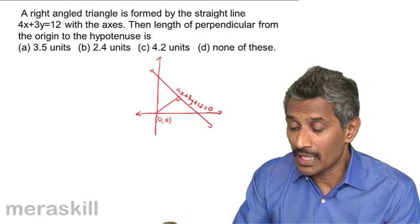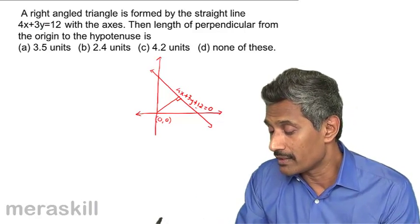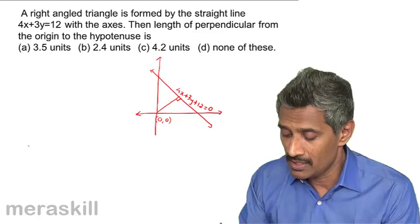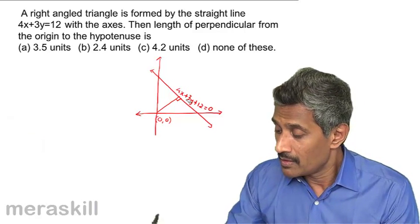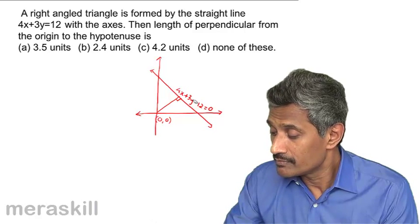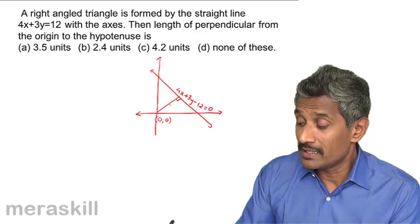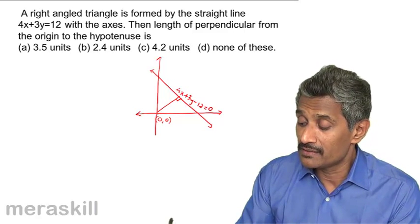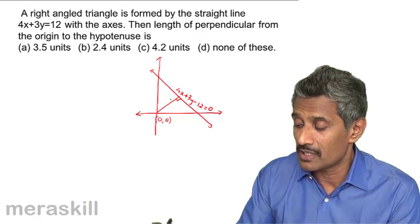Oh, I just noticed—it's 4x plus 3y equals 12, so it should actually be 4x plus 3y minus 12 equals 0. You have to find the distance of the origin from the line. So this is x1, y1, where a is 4, b is 3, and c is minus 12.